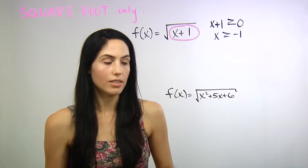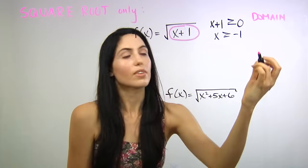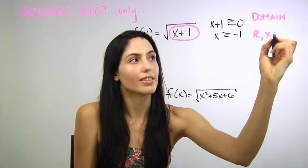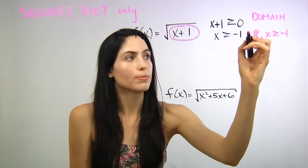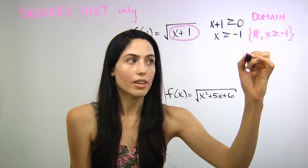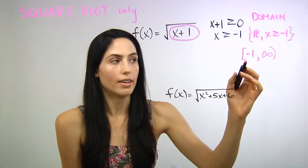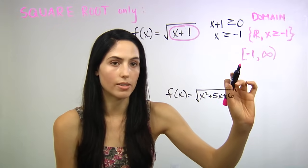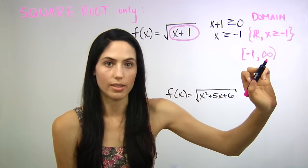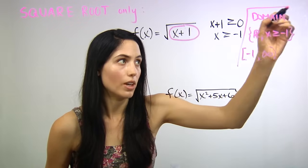You're going to solve that normally as you would solve any inequality, and you get the restriction: x is greater than or equal to negative one. So your domain would be all real numbers, x greater than or equal to negative one. Or you can write in interval notation: everything from negative one, including negative one (square bracket), all the way up to infinity (parentheses). Either of these ways is fine as notation for the domain.